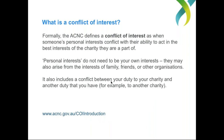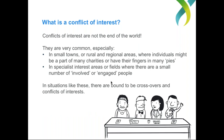I'm going to throw over to Sarah, who is going to give us an overview of what a conflict of interest is. So a conflict of interest can be described as a point where a person's normal or everyday life intersects with their charity life — demonstrated by the Venn diagram on the slide. Formally, the ACNC defines a conflict of interest as when someone's personal interests conflict with their ability to act in the best interests of the charity that they are part of. A personal interest does not need to be your own interest; it can also arise from the interests of your family, friends, or any other organisations you're involved with.